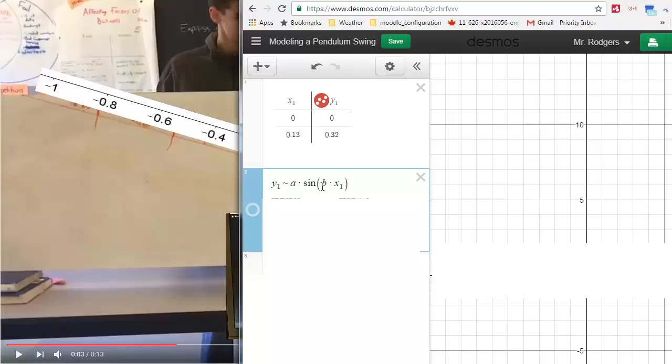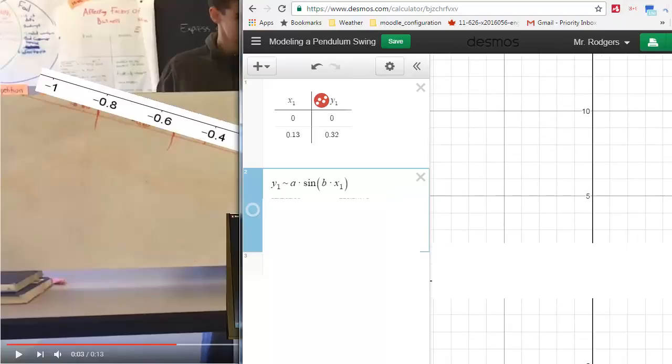And so here is the example of what you are going to be entering, so find out what your a and b values are for this particular swing. Make sure you zoom in and out on Desmos so that you really appreciate what you have done.